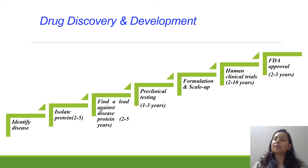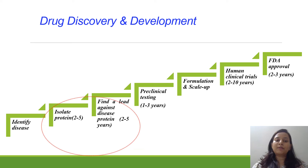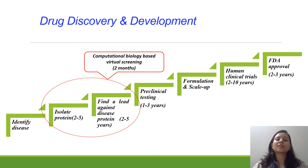Once the drug passes preclinical testing, it then comes to formulation, followed by human clinical trials, and then FDA approval. During all these stages, the entire process takes around 15 to 20 years.